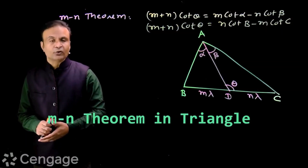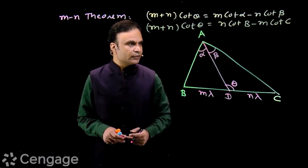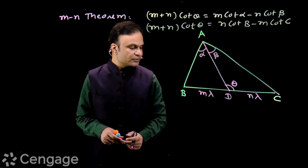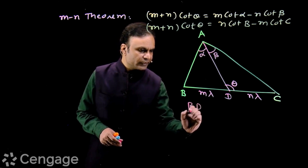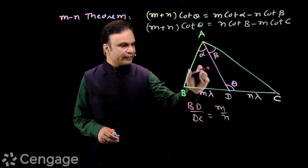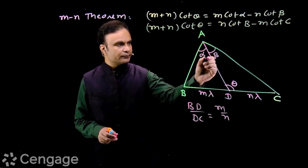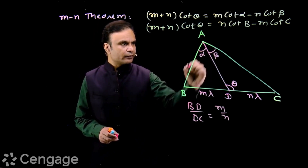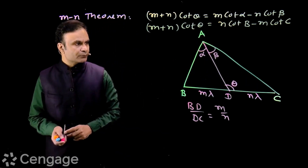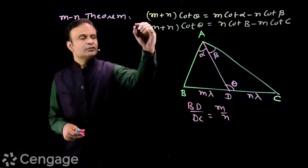Now we have the MN theorem. The theorem states: we have triangle ABC, a line through vertex A meets the opposite side BC at D. D divides BC in the ratio m to n, so BD upon DC is equal to m upon n. The angle between the line AD and BC is theta. The line divides angle A such that angle BAD is alpha and angle DAC is beta.